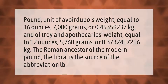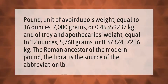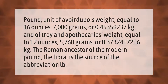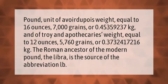Pound: a unit of avoirdupois weight equal to 16 ounces, 7000 grains, or 0.45359237 kilograms; and of troy and apothecary's weight, equal to 12 ounces, 5760 grains, or 0.3732417216 kilograms. The Roman ancestor of the modern pound, the libra, is the source of the abbreviation lb.